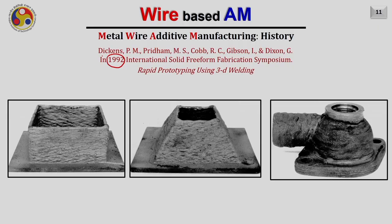In 1992, an article published in the International Solid Freeform Fabrication Symposium — 'Rapid Prototyping Using 3D Welding' — showed researchers who took this technology forward and actually built real functional parts using a welding gun. These are some of their initial prototypes using 3D welding.